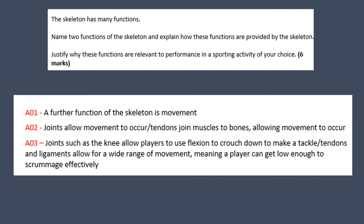For our second main paragraph, we're going to discuss movement. For AO1, a further function of the skeleton is movement. For AO2, we can explain this: joints allow movement to occur, and tendons join muscles to bones, allowing for this movement.